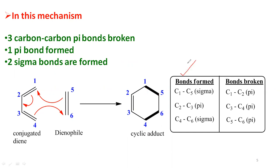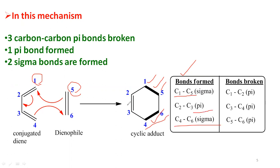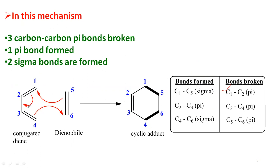In the adjacent table, you can see where the new bonds are formed and where the bonds are broken. C1 and C5 — C1 from the conjugated diene, C5 from the dienophile — form a new sigma bond. Another new sigma bond is formed between C4 and C6. One pi bond is formed between C2 and C3. The broken bonds are: the C1–C2 pi bond of the diene, the C3–C4 pi bond of the diene, and the C5–C6 pi bond of the dienophile.